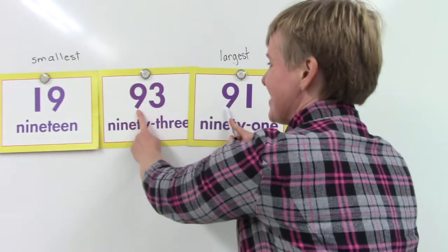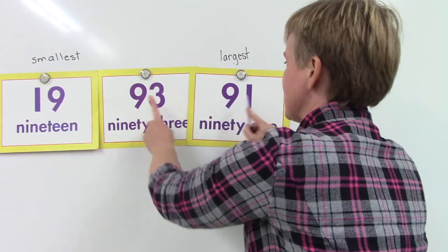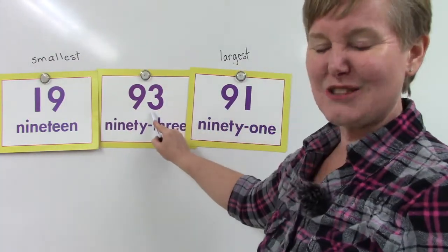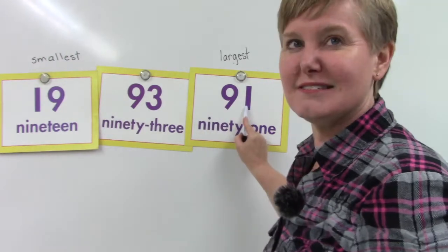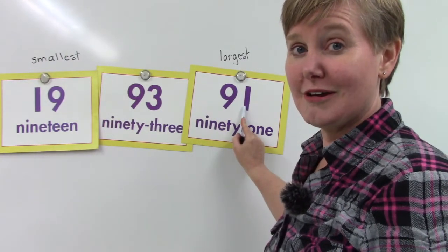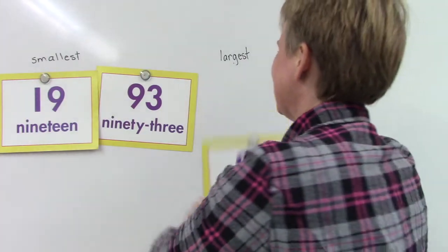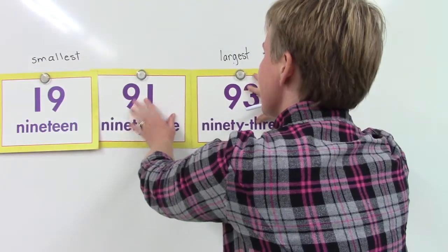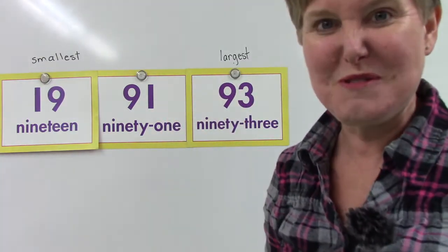Here we have a 9 and a 9 in the tens place, and now we're going to look at the ones place. In 93 there's a 3, and in 91 there's a 1. Which one's smaller — 1 or 3? So 93 is our largest, and 91 would come before that.